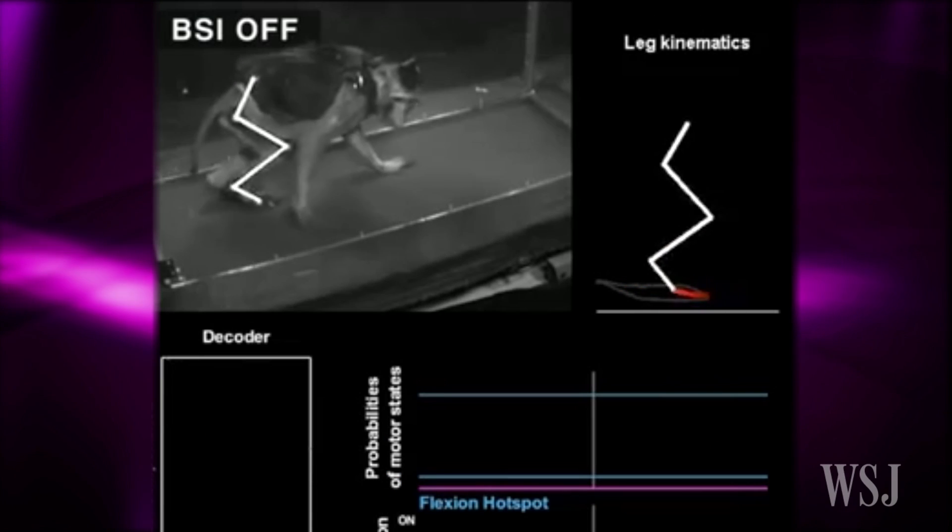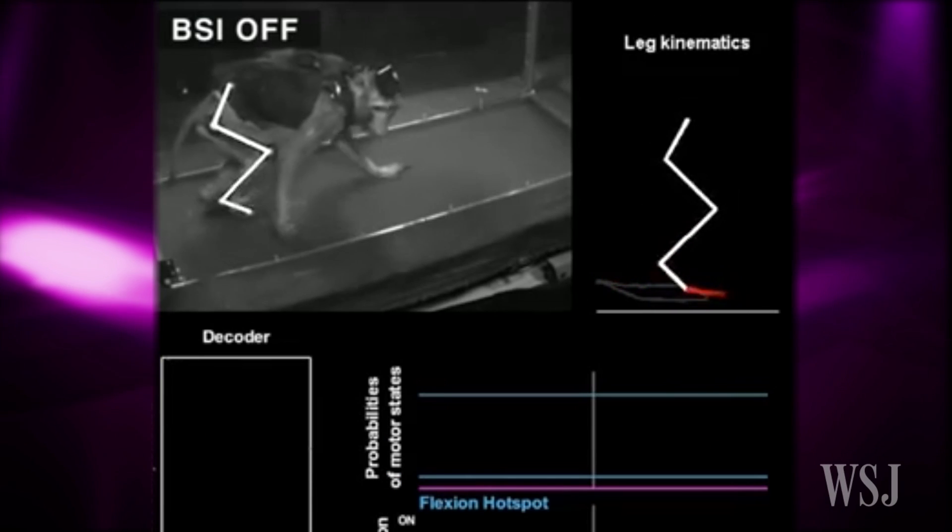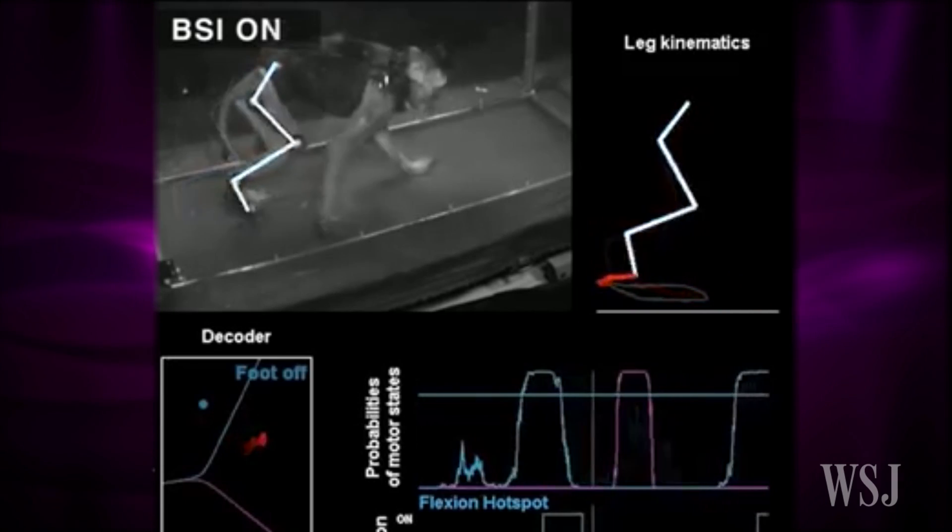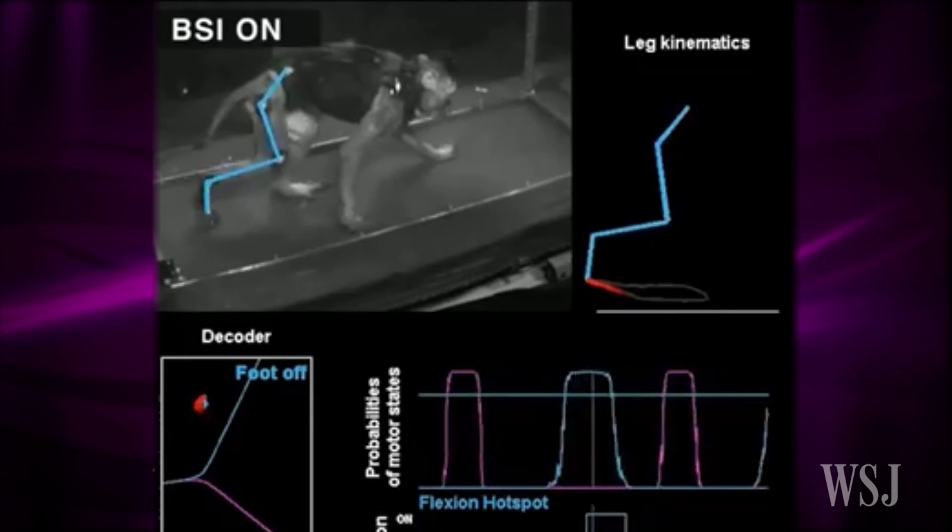The Swiss researchers say their success with the brain-spine interface with monkeys could be the first step toward a clinical trial involving people with spinal cord injuries.